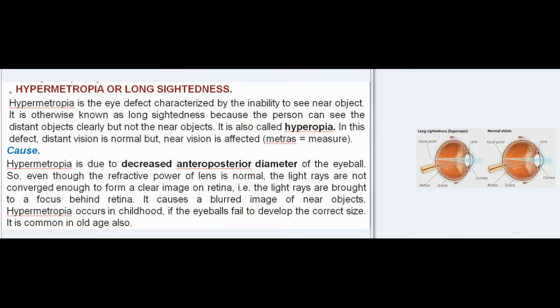Hypermetropia, or long-sightedness: Hypermetropia is the eye defect characterized by the inability to see near objects. It is otherwise known as long-sightedness because the person can see distant objects clearly but not near objects. It is also called hyperopia. In this defect, distant vision is normal but near vision is affected. (Metras = measure.)